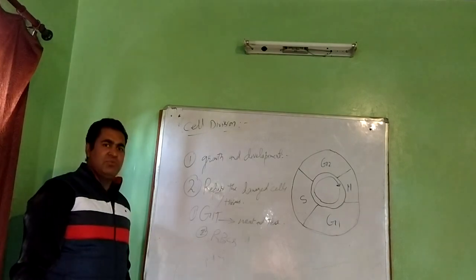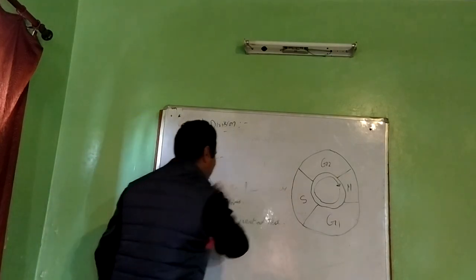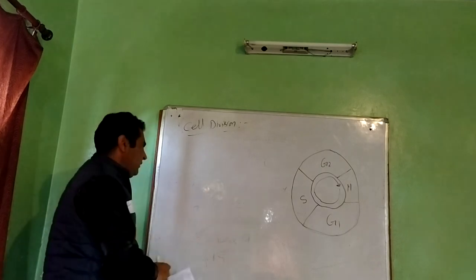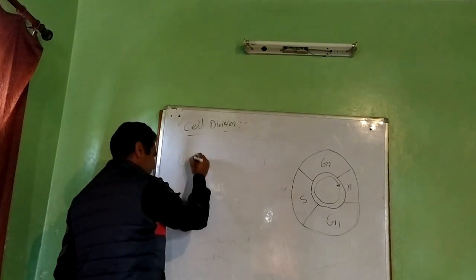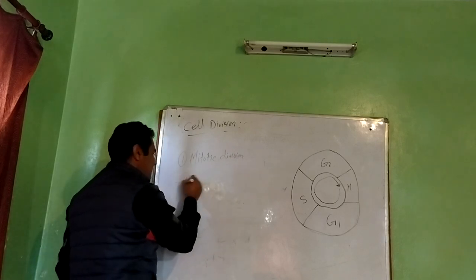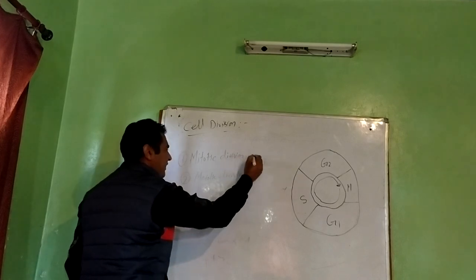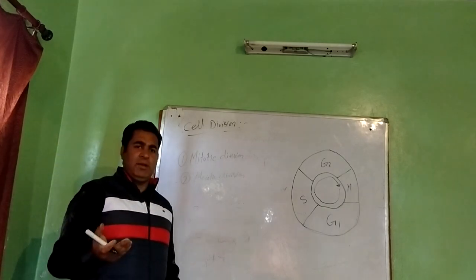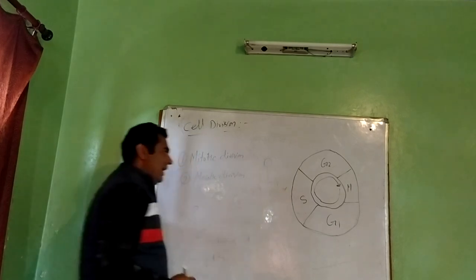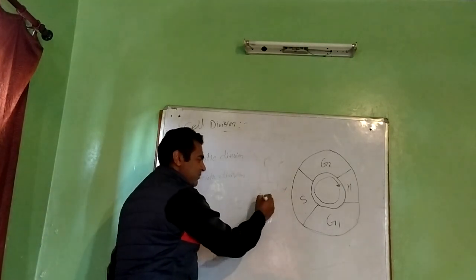In eukaryotes we have two types of division. Let's talk about mitotic division. In mitotic division, daughter cells are identical to parent cells in every respect. The DNA content in the parent and offspring is the same. They are exact copies of each other, although there will be some genetic changes, but the genomic content will be the same.